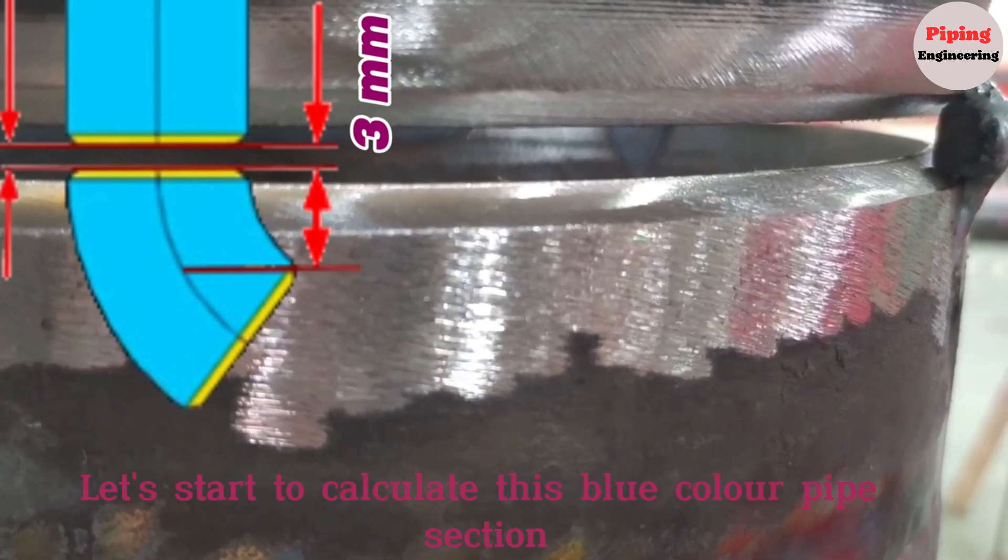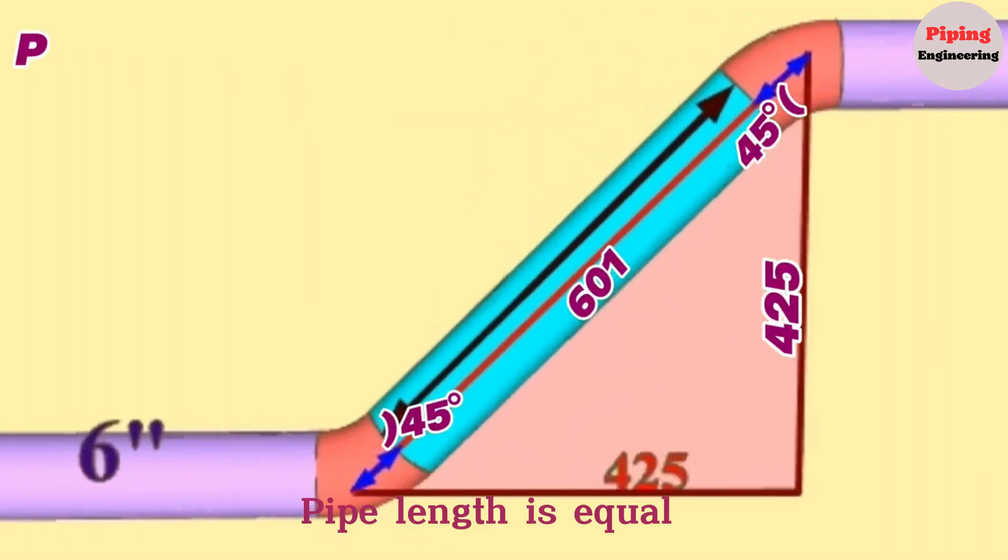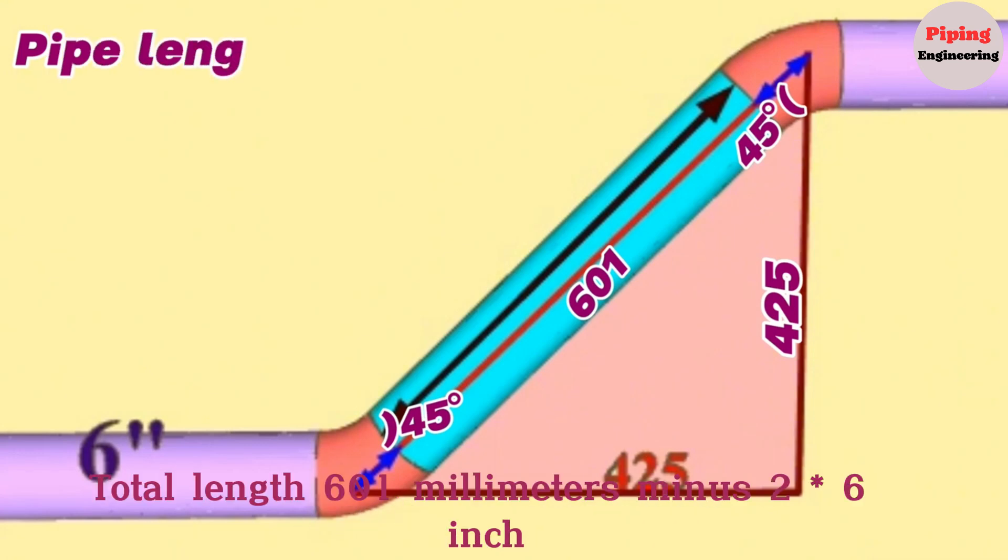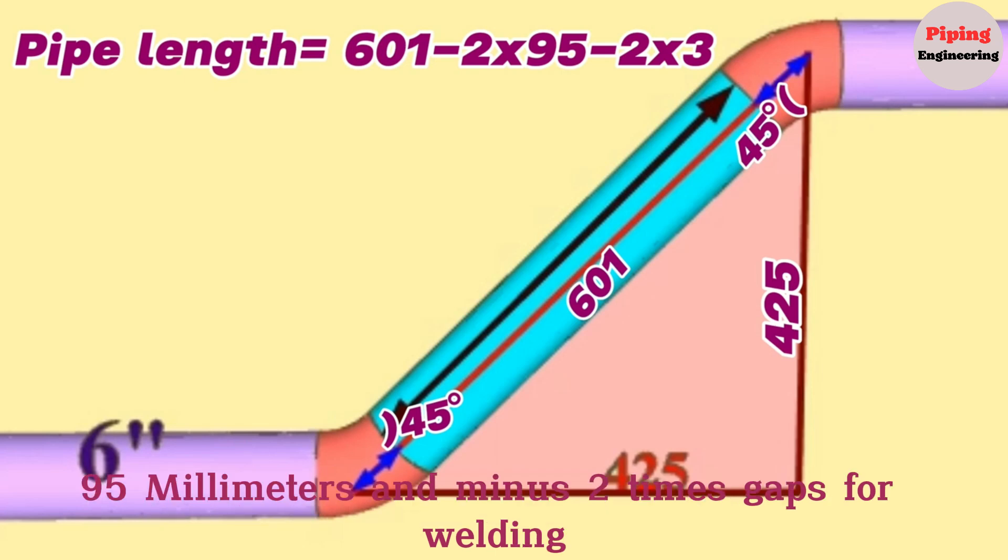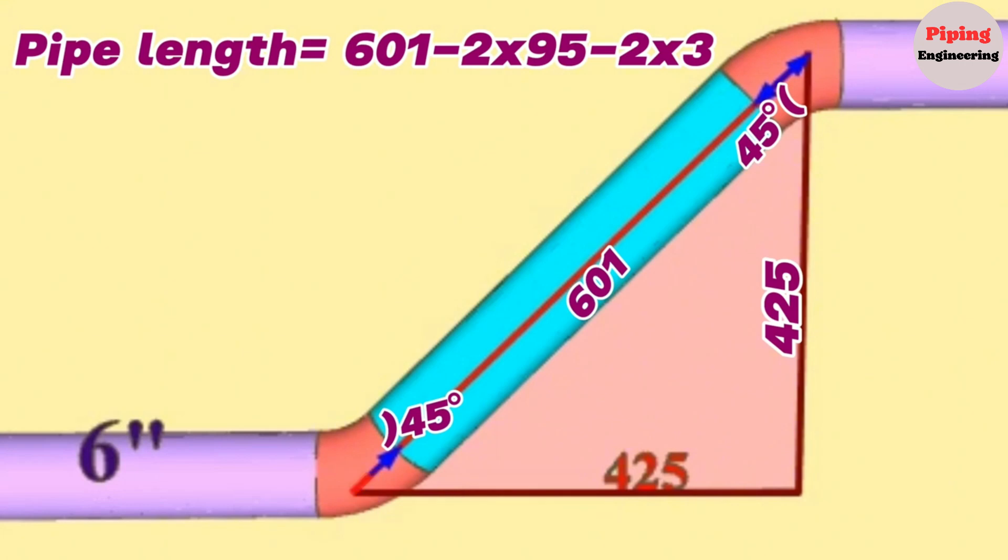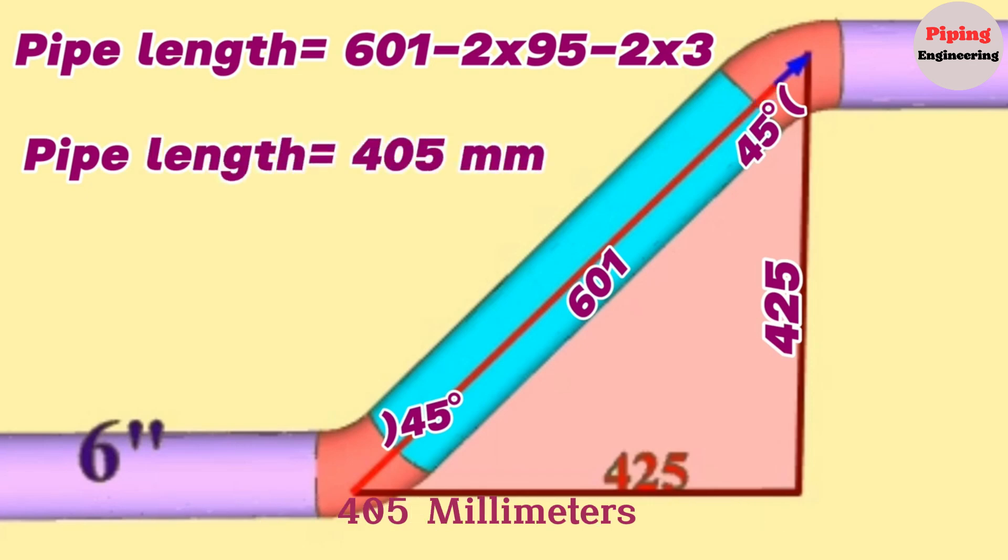Let's start to calculate this blue color pipe section length. Pipe length is equal to total length 601 millimeters minus 2 times 6-inch 45-degree butt weld elbow dimension 95 millimeters and minus 2 times gaps for welding 3 millimeters. Finally, we calculated and found that the length of the 6-inch blue pipe in this pipeline is 405 millimeters.